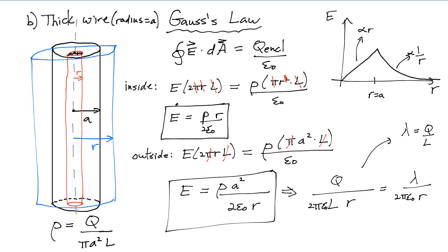So to recap: whenever you have an object that has cylindrical symmetry, we simply have to look at the left-hand side of Gauss's law. The form is a little bit different than the spherical case, but pretty straightforward. If you have any questions, please don't hesitate to leave a comment or send me an email. Thank you for watching.